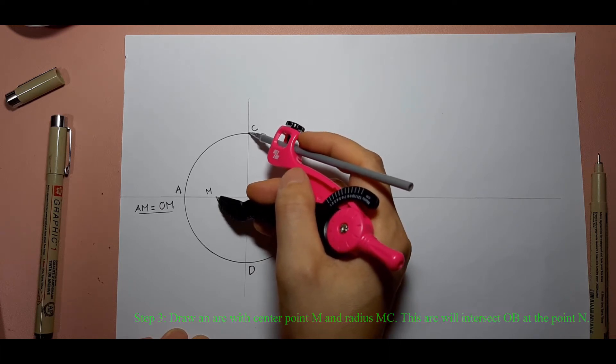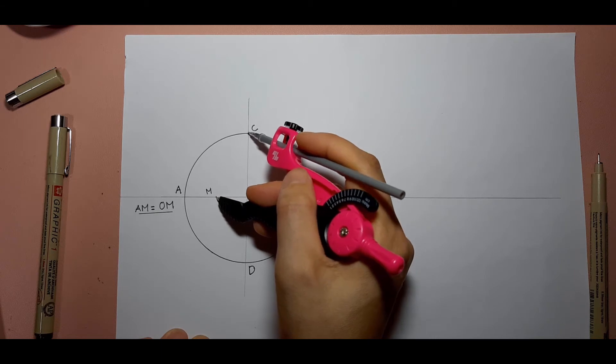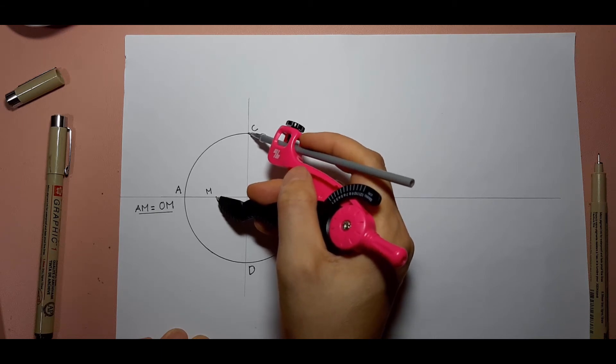Step 3: Draw an arc with center point M and radius MC. This arc will intersect OB at the point N.